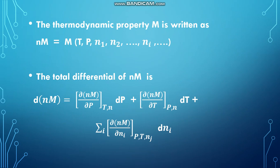The thermodynamic property M is written as Nm as a function of temperature, pressure, N1, N2, and so on Ni. Making this differentiation, the total differential of Nm is D of Nm equal to dou of Nm by dou P at constant temperature and N into dP, plus dou of Nm by dou T at constant pressure and N into dT, plus sigma i of dou Nm by dou Ni at constant T, P, Nj into dNi.